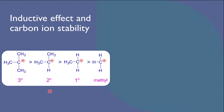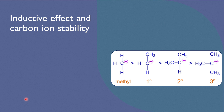When positive inductive groups like alkyl are present next to positively charged carbons, they will push electrons towards the positive carbon and the carbocation stability will increase. The positive inductive effect helps diminish the positive charge on the carbon by giving a negative charge density, and because of this, the carbocation becomes more stable. Conversely, positive inductive groups lower carbanion stability. Alkyl groups, which have a positive inductive effect, will transfer electron density to the negatively charged carbon and increase the negative charge concentration, thus decreasing carbanion stability.